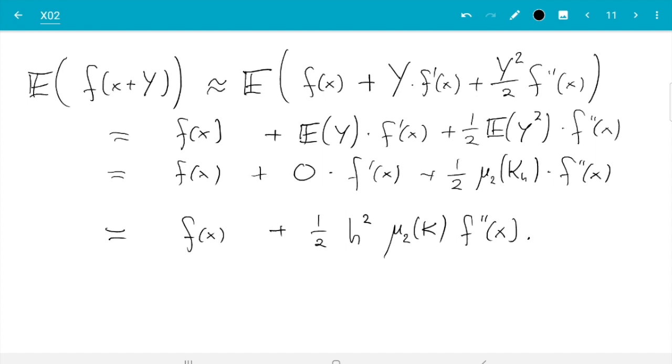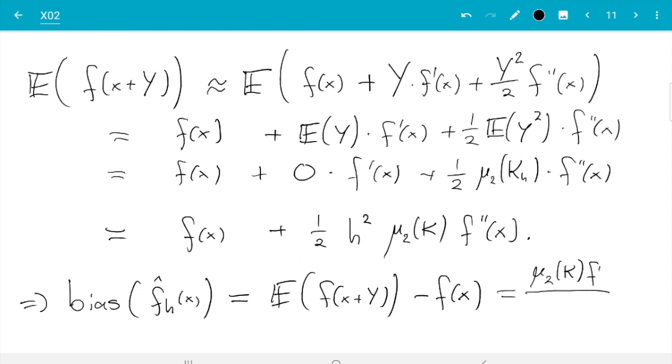And that looks not too bad. And it gets even better because the bias subtracts an f(x) from there. So bias of f̂_h at the point x is we have seen on the previous pages, that is expectation of f(x+Y) minus f(x). So that f(x) is cancelled. So what we get is just μ_2(k) f''(x) over 2 times h squared. So that's our result here.